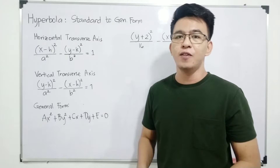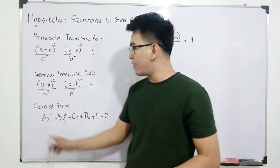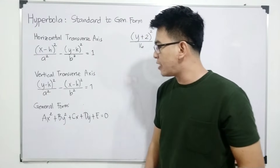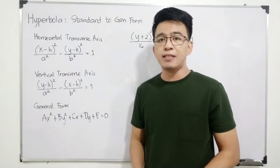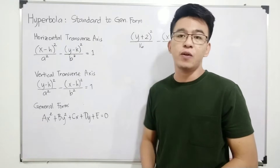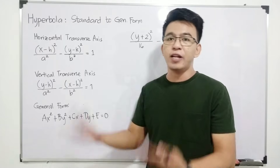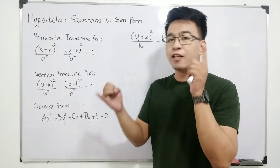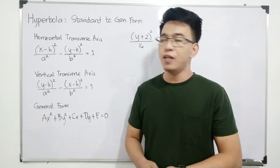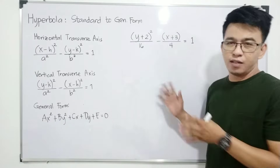Now, the general form is: Ax squared plus By squared plus Cx plus Dy plus E equals zero. This is the general form of our conic section, starting from the circle up to the hyperbola.